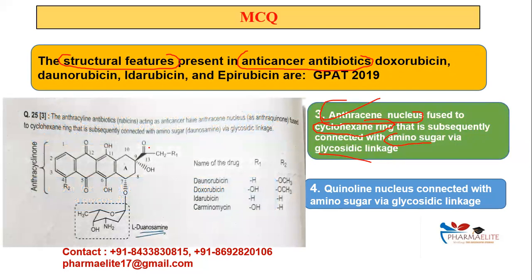Looking at the structures: in idarubicin, the R1 and R2 positions carry only H. The amino sugar present in these anthracycline antibiotics is called L-daunosamine — this is a very commonly asked question. Don't forget the amino sugar name: L-daunosamine.